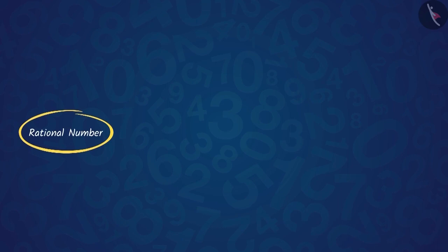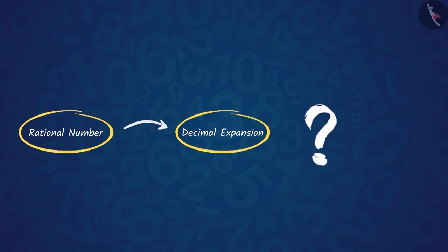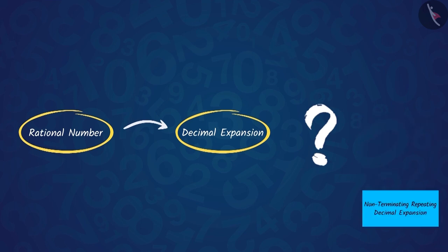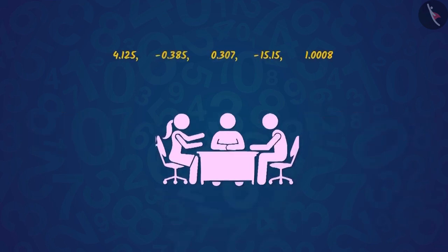Now, the question is: should we use the same method to find out whether the decimal expansion of a rational number is terminating or non-terminating? Or do we have some other method as well? Let's discuss these decimal numbers to find out.